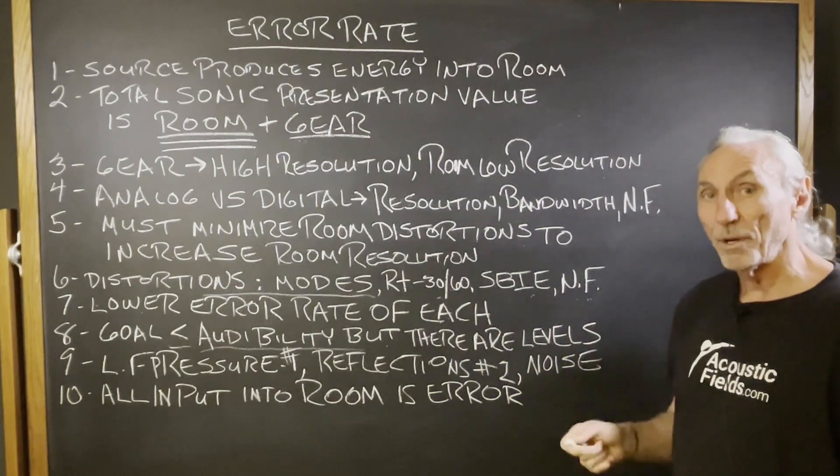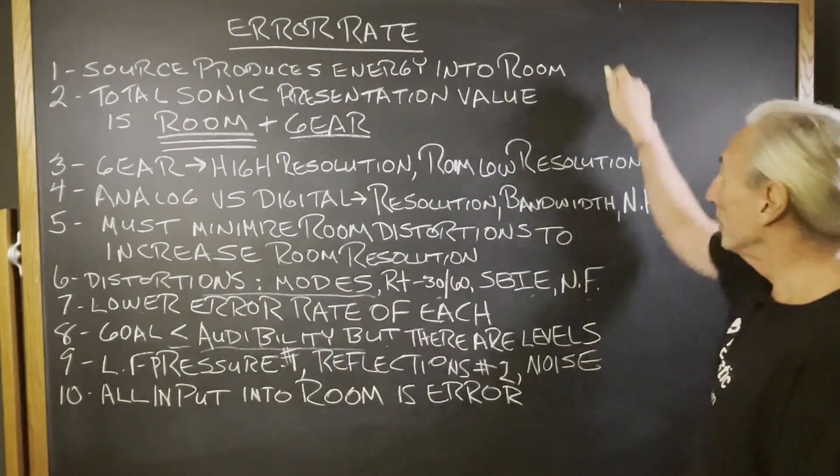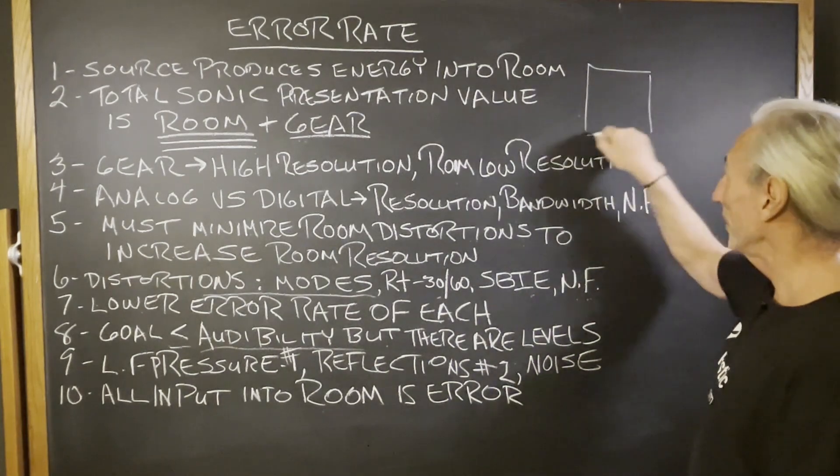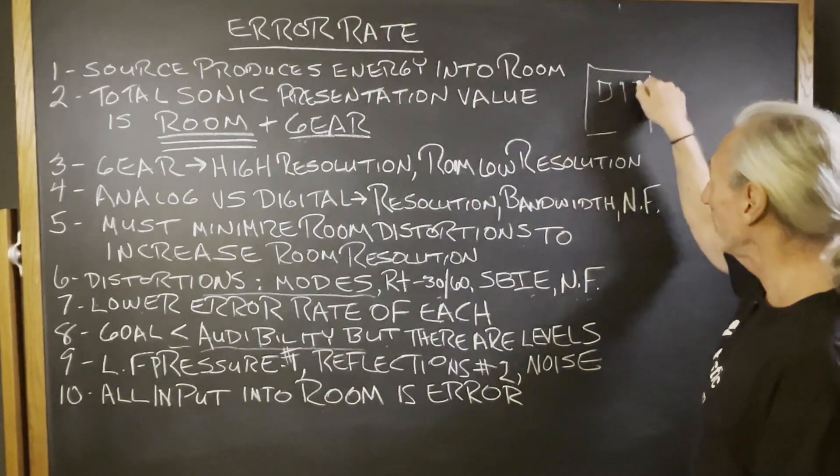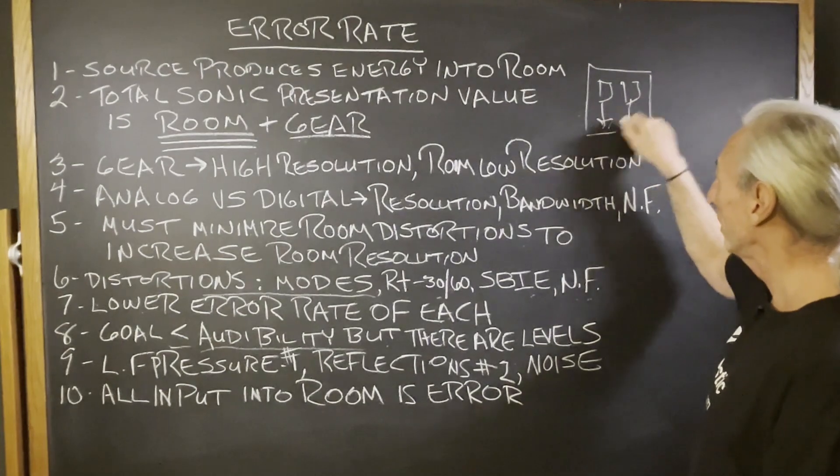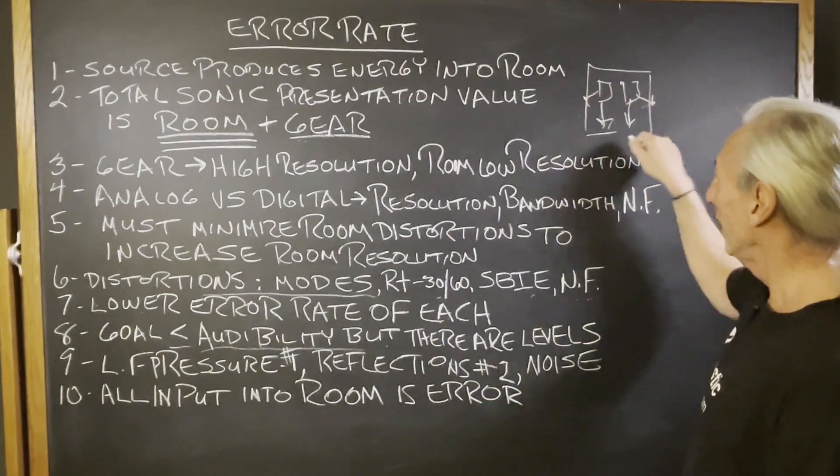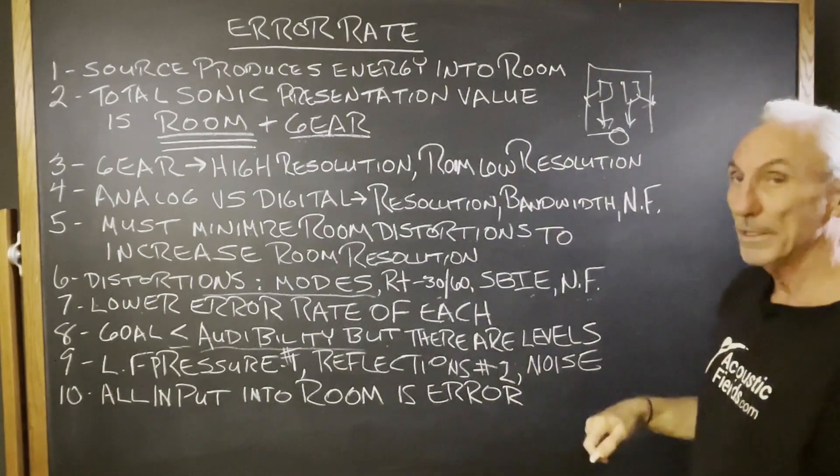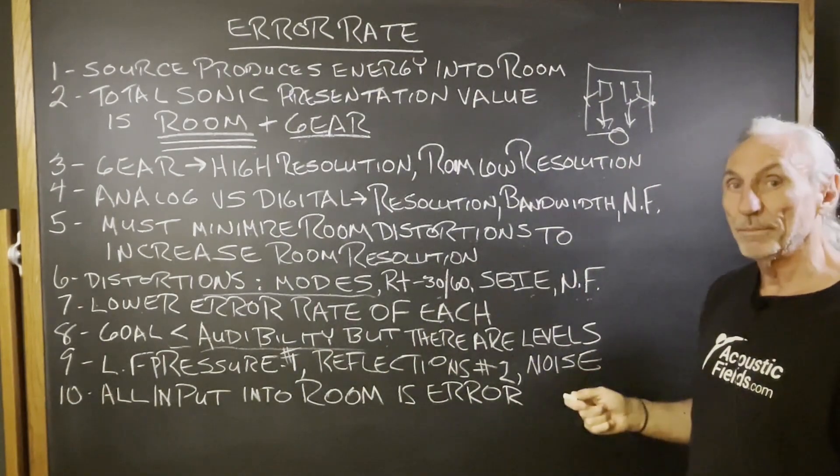But we want to get them to fall below audibility. Just like in our examples with reflections and speakers, we have a balance between the direct and the reflected energy at the listening position. Same thing in a room.